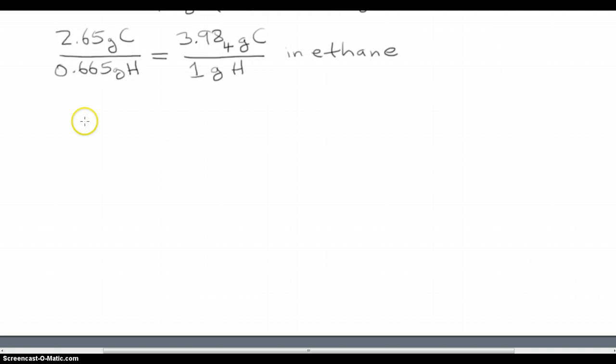And for acetylene, you're told that there are 4.65 grams of carbon per every 0.383 grams of carbon. And this gives us 12.1 or so grams of carbon per every 1 gram of hydrogen and acetylene.